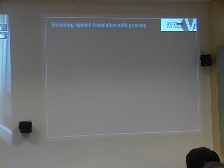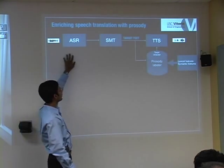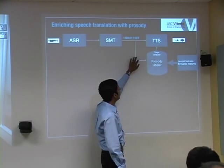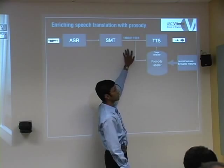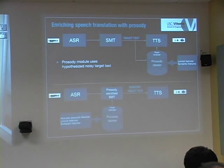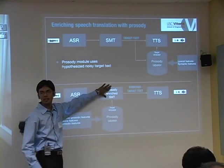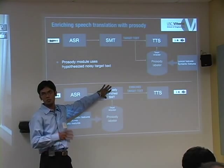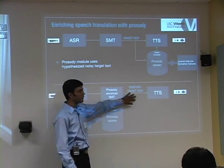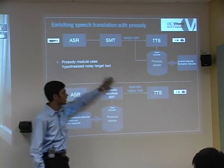Let's move on to enriching translation with prosody. In a conventional system, you have ASR output going to machine translation with hypothesized noisy text, and if you detect prosody labels from this target text you're using noisy text — a very inefficient approach. In contrast, we can factor the prosody labels within the translation framework using factored translation models, which have been used for morphology and lemmas. The question is: can we use prosody labels within the translation framework to get enriched target text that is much better than a post-processing approach?